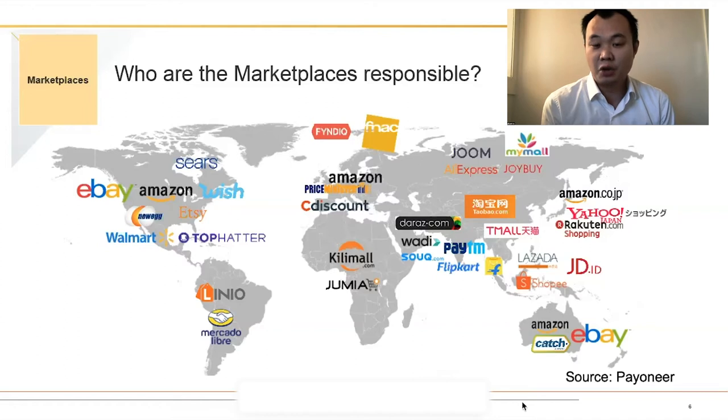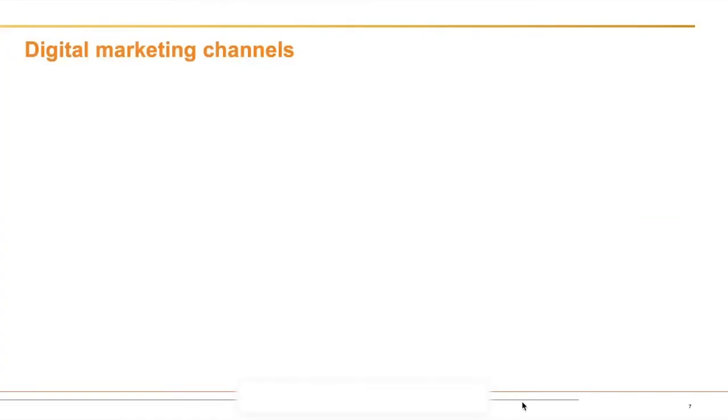There are a lot of logos here, and many names may be unfamiliar. For example, in Australia, Amazon, eBay, and Catch of the Day are very popular. In China, Tmall Global, Taobao, and JD.com are the most used platforms. In Southeast Asia it would be Lazada or Shopee, and in Japan it would be Amazon or Rakuten. So apart from the well-known marketplaces, depending on which market you want to tap into, you really need to do further research to understand which marketplaces are popular locally.